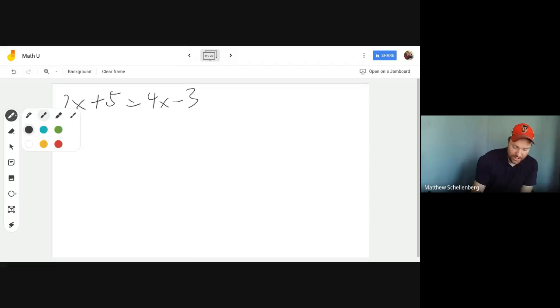So what I'm going to do is I'm going to try to move all the terms of the variable I'm solving for onto the same side. And that would mean I'm going to subtract 2x from both sides. And that will give me 5 equals 2x minus 3.